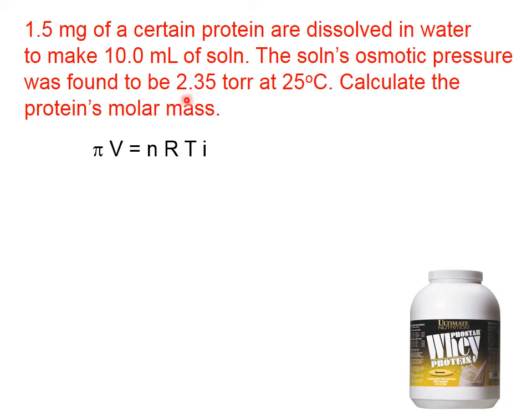For one thing, we're given the osmotic pressure. Now, we're given it in torr, and the R values that we wrote down on the previous slide require that the pressure either be in kilopascals or atmospheres, but we can make that conversion. Essentially, we have the osmotic pressure. We have the volume. Now, again, that needs to be in liters, and it isn't given in that unit, but we can change it.